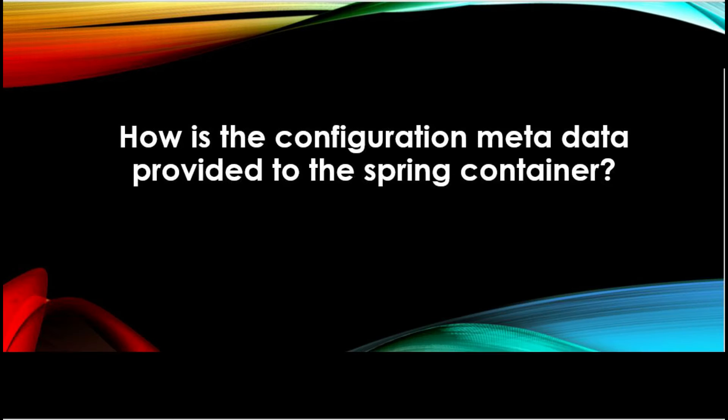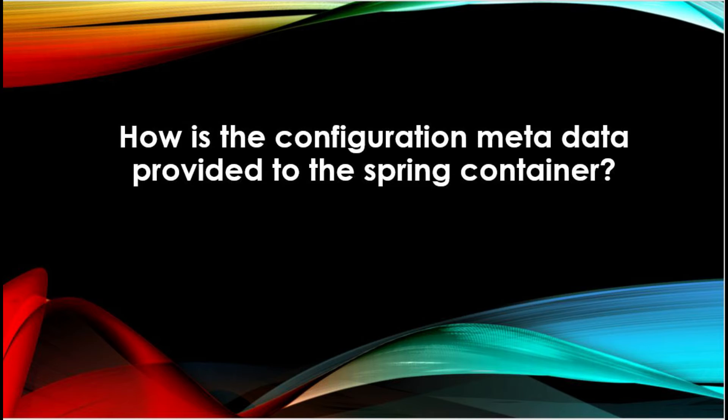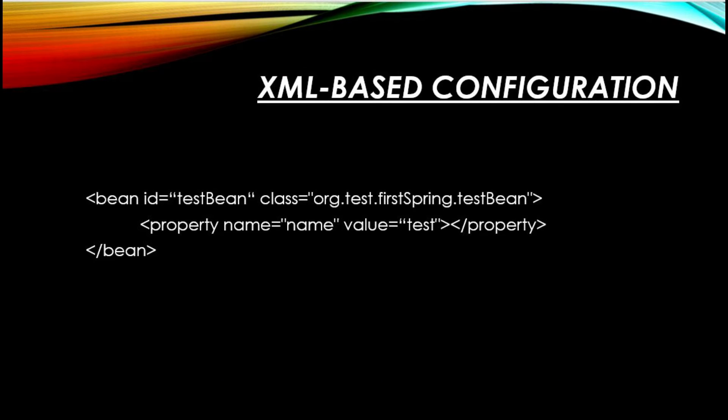How is the configuration metadata provided to the Spring container? There are three ways of providing the configuration metadata. The bean configurations and their dependencies are specified in XML configuration files. This starts with a bean tag — as you can see here, it starts with the bean tag.